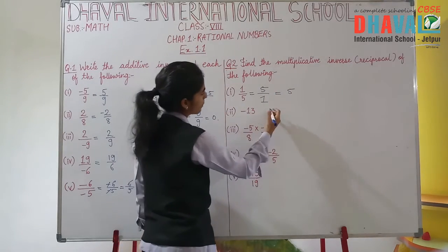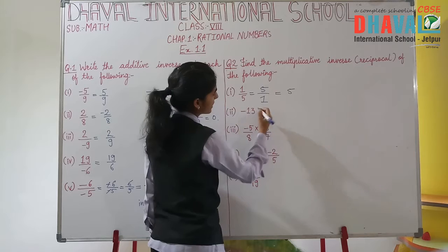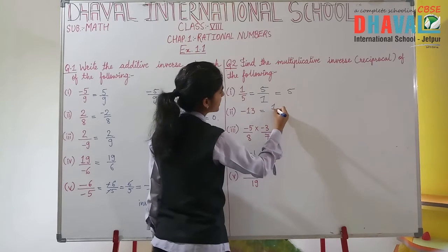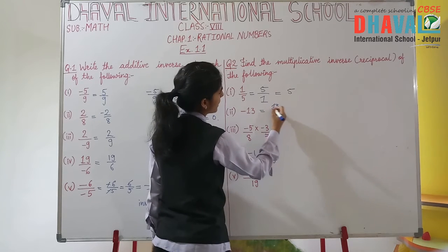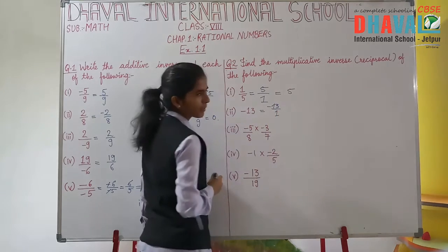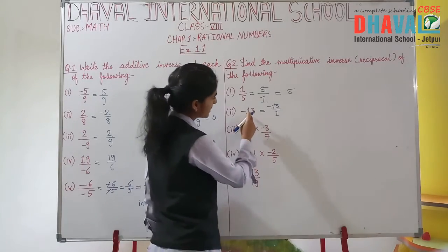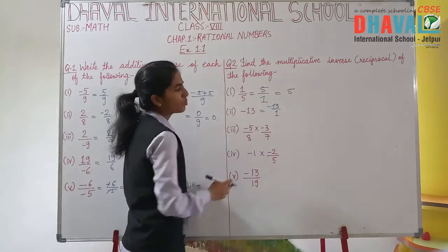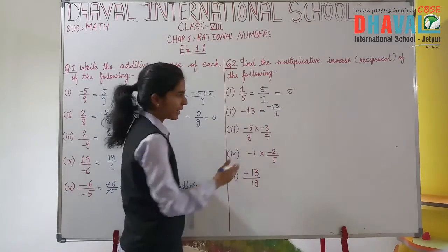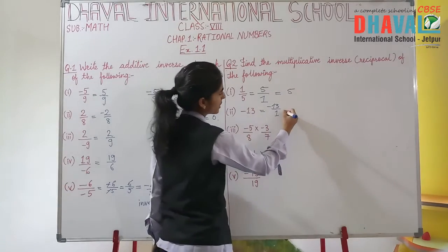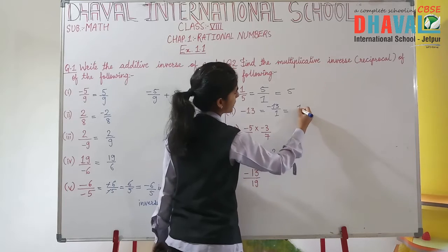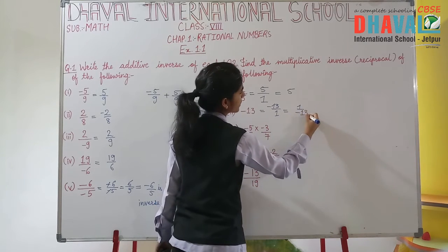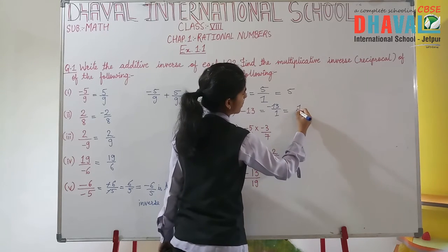Here we have minus 13 upon 19. To find its multiplicative inverse, we flip the fraction: the answer will be minus 19 upon 13. The denominator becomes the numerator and the numerator becomes the denominator, so 1 upon minus 13 flipped gives minus 13 upon 1.